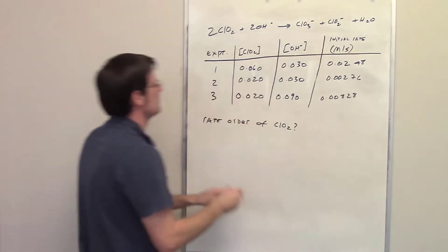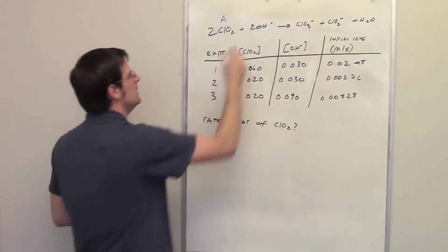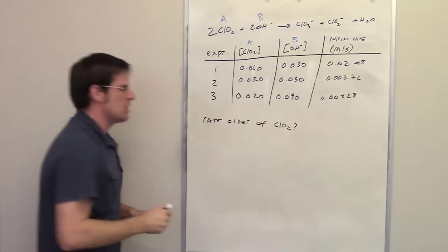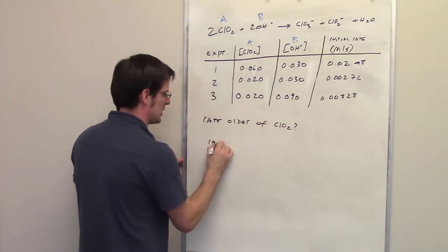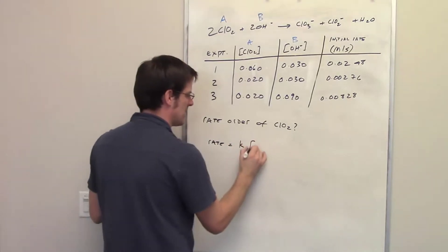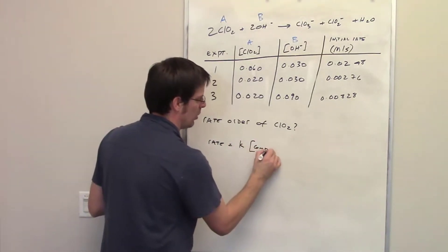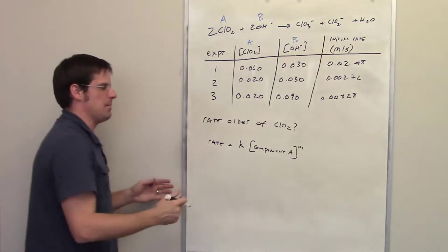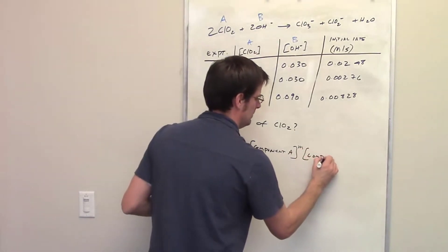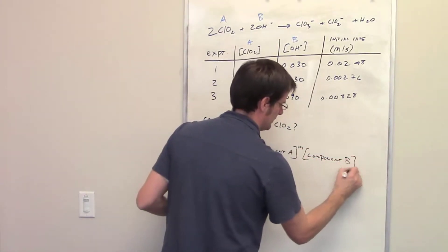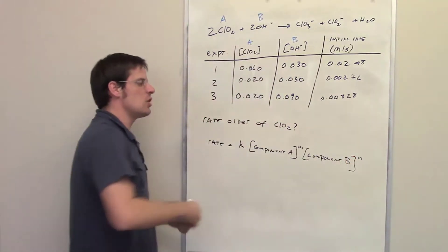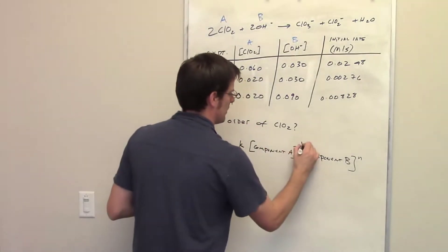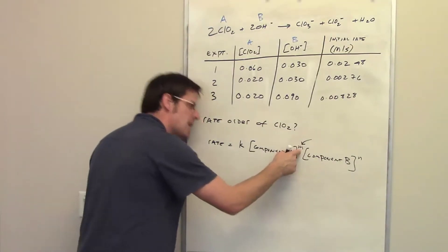I'm going to call chlorine dioxide component A and the hydroxide component B. We should remember that the rate of any reaction is going to be equal to some rate constant K, multiplied by the concentration of component A raised to some exponent M, multiplied by the concentration of component B raised to some exponent N. So what we're really trying to determine is what M is.